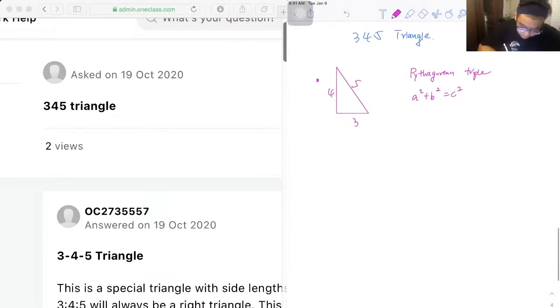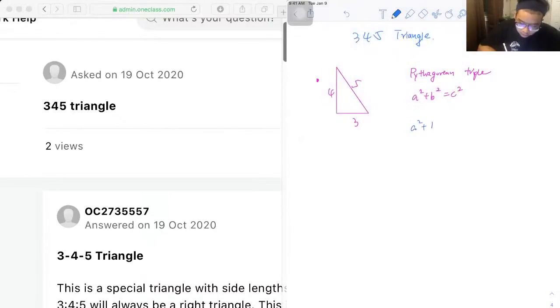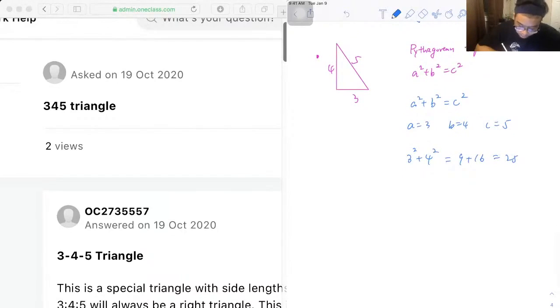All right, so let us try. We have a² + b² = c², where a = 3, b = 4, c = 5. So we have 3² + 4², which is 9 + 16, which gives us 25. And c² is 5², so 5 times 5 is 25.